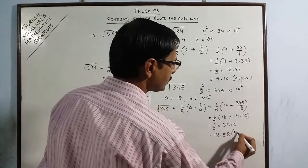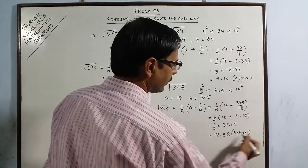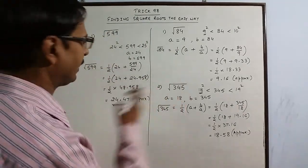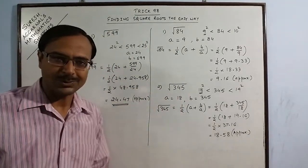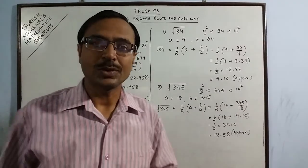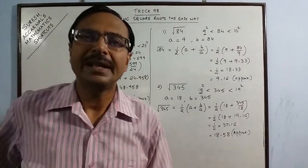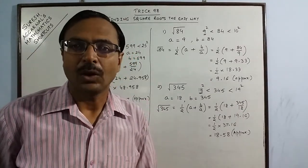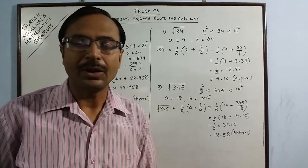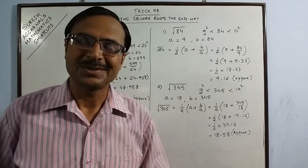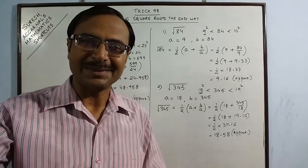These are all approximate values, obviously the square root goes on and on. So up to 2 digits, the value of square root can be found out by using this method. So students, this is an amazing method of finding the square roots if you are not comfortable with the traditional long division method of square roots. So keep learning and keep sharing the videos if you like them.